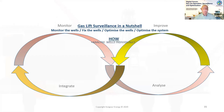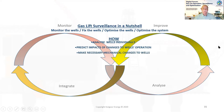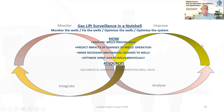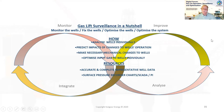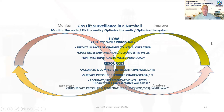How? Analyse wells individually. Predict impacts of changes to well operations. Make necessary mechanical changes to the wells. Optimise input gas to wells individually. The resources to be used are accurate and complete representative well data — we'll explain that later. Surface pressure recorder charts, SCADA, now known as your PI or dashboard on your desktop. Accurate and representative well tests — or in Jim's case, repeatable well tests. We'll talk about that later in the session.